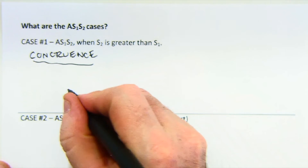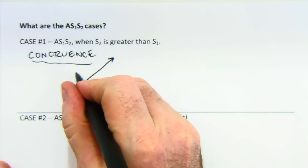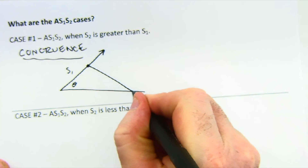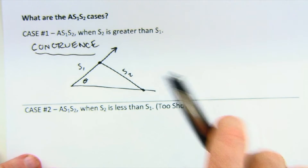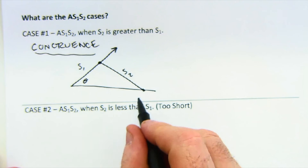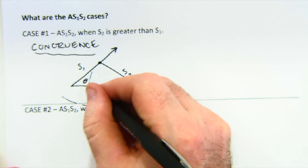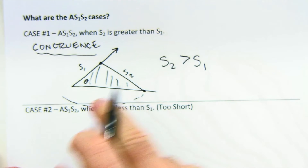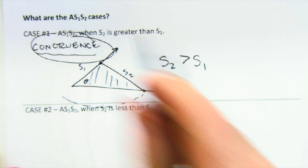Why does side two greater than side one always give congruence? Because I have some angle, and side one is shorter than side two. If you tried the swinging arm technique, it would never strike back to create a second triangle. So as long as side two is greater than side one in the angle-side-side relationship, you always create a congruence.